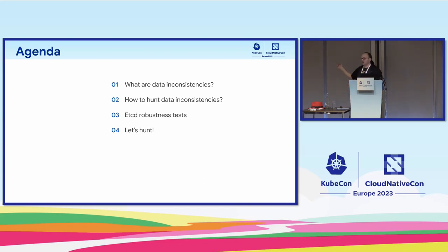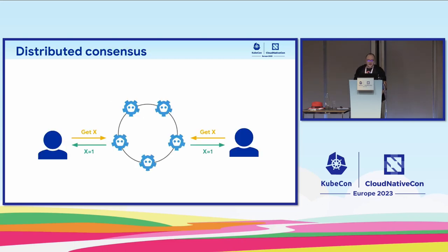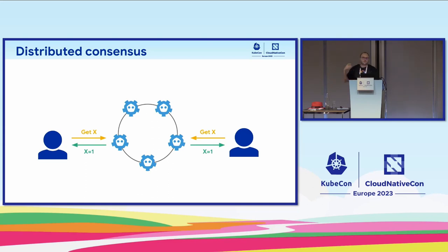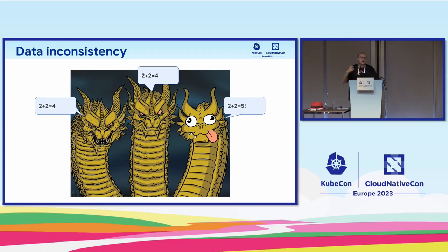At the end I'll do a short demo showing how it works in practice. etcd implements so-called distributed consensus — multiple processes of the etcd server run as a single unit, a cluster that can consistently respond to user requests. Any user can observe the same data, and any write by a user can be observed by all users. An inconsistency is when one of the instances breaks loose and starts producing incorrect results.